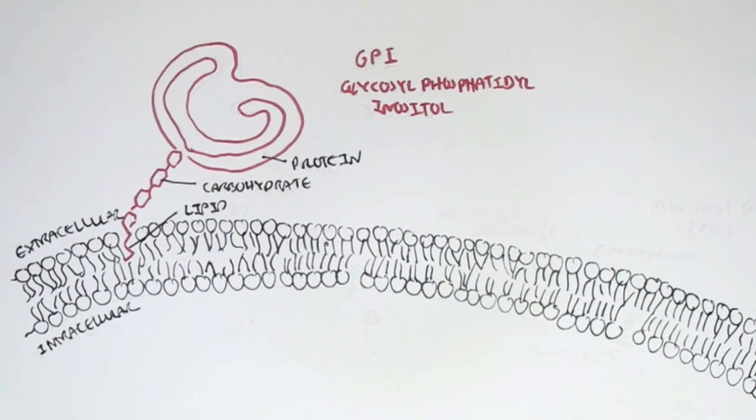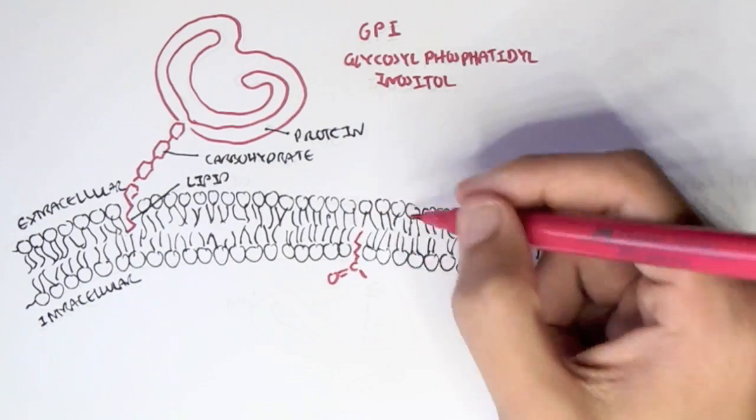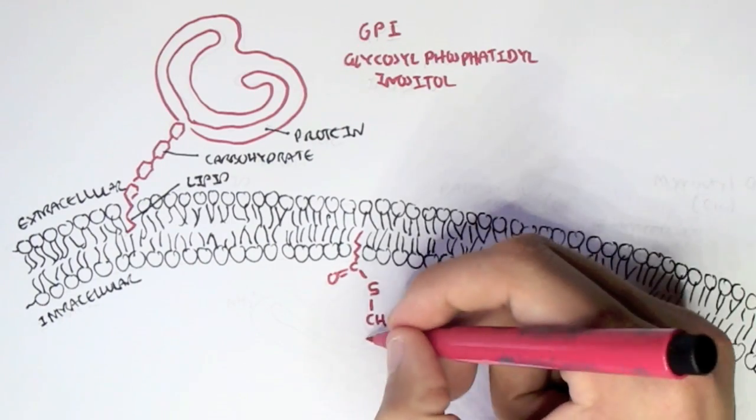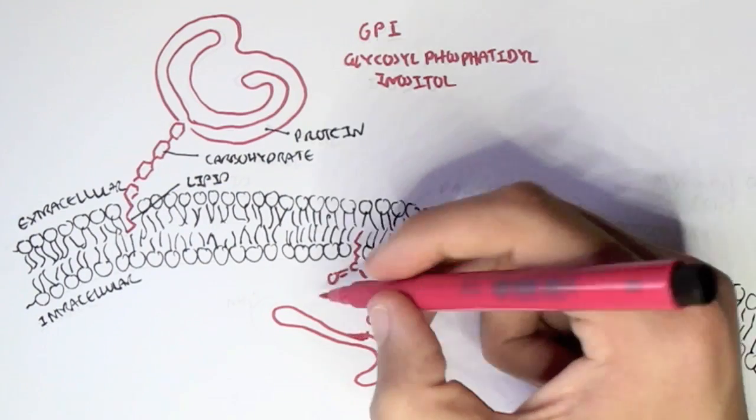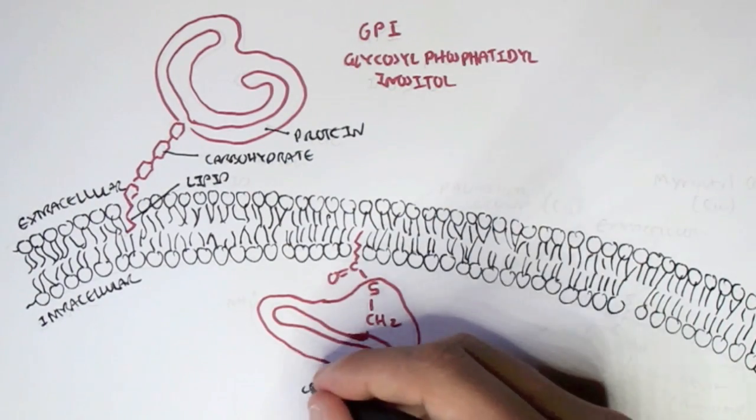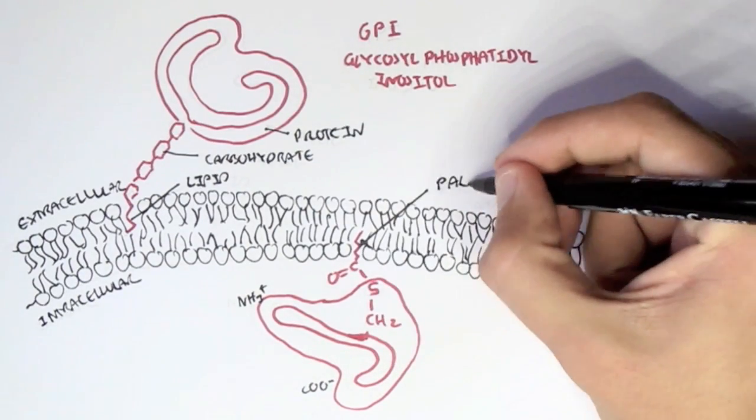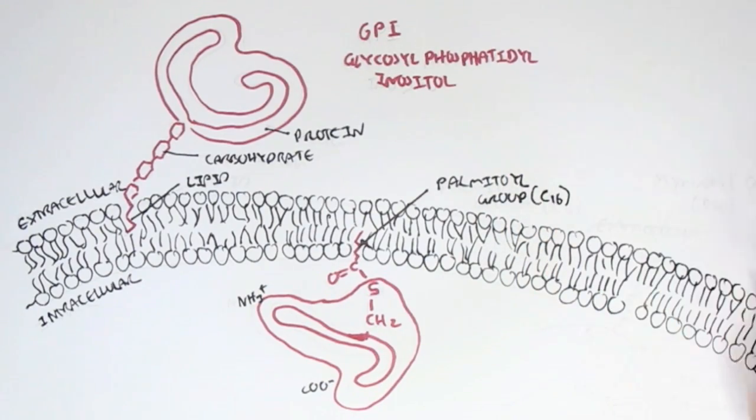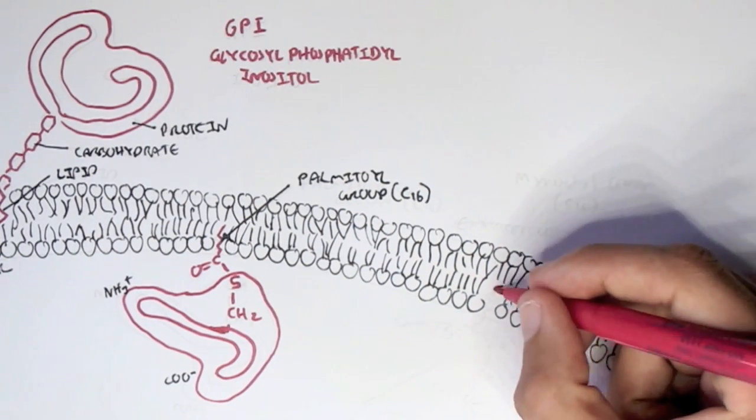We will look into this GPI protein later on, but there are other types of lipid-linked proteins which do not have carbohydrates, and these vary depending on the fatty acid chain it contains, such as this one which has a palmitoyl group consisting of a 16-carbon fatty acid chain. And as you can see, the amino group and the carboxyl group of the protein is within the intracellular fluid.